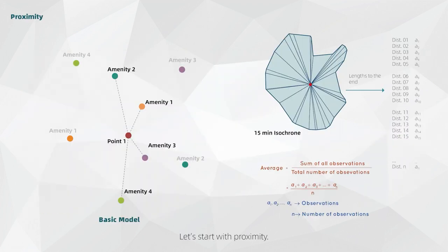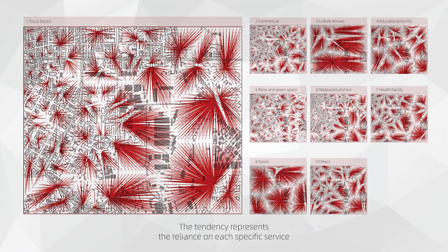Let's start with proximity. The basic model is to measure the linear distance between each point to the closest amenities. So for each point, it always has this value, no matter if it is in a 15-minute catchment or not. This distance is then divided by the equivalent walking speed. Each point may have its own equivalent walking speed, which is obtained through the analysis of its 15-minute isochrone.